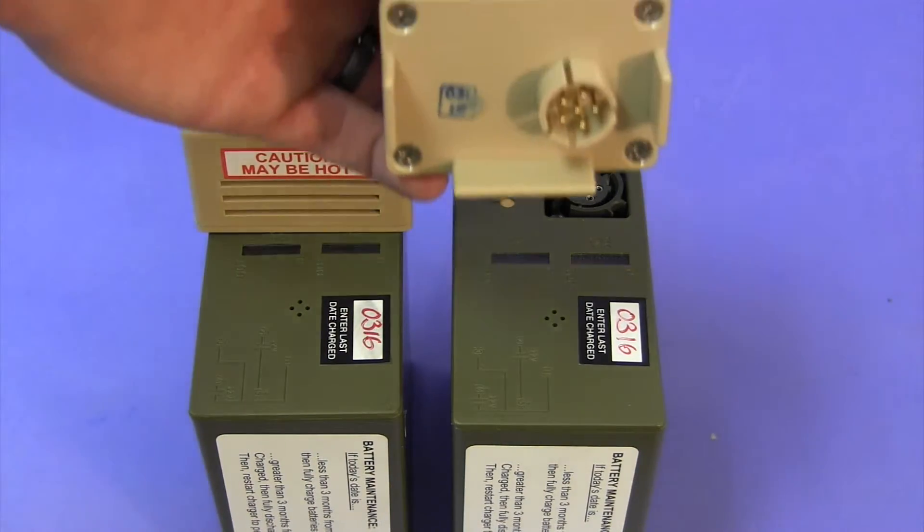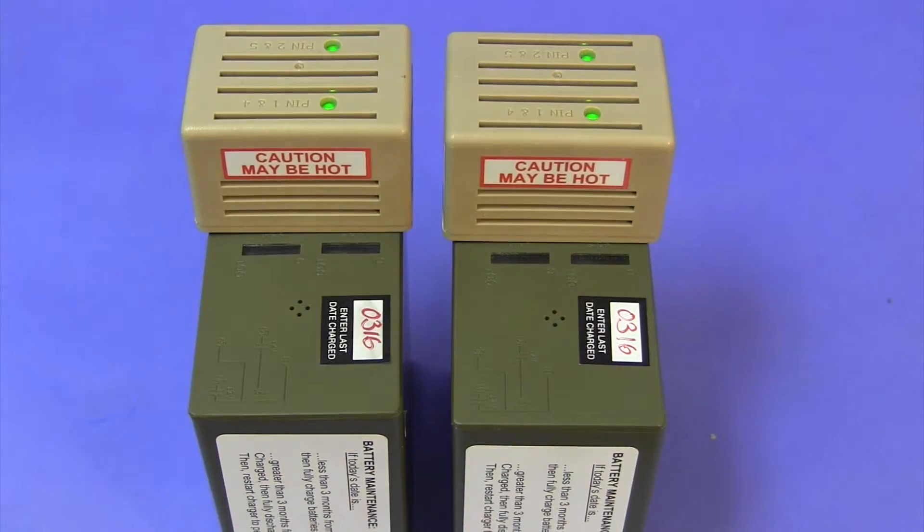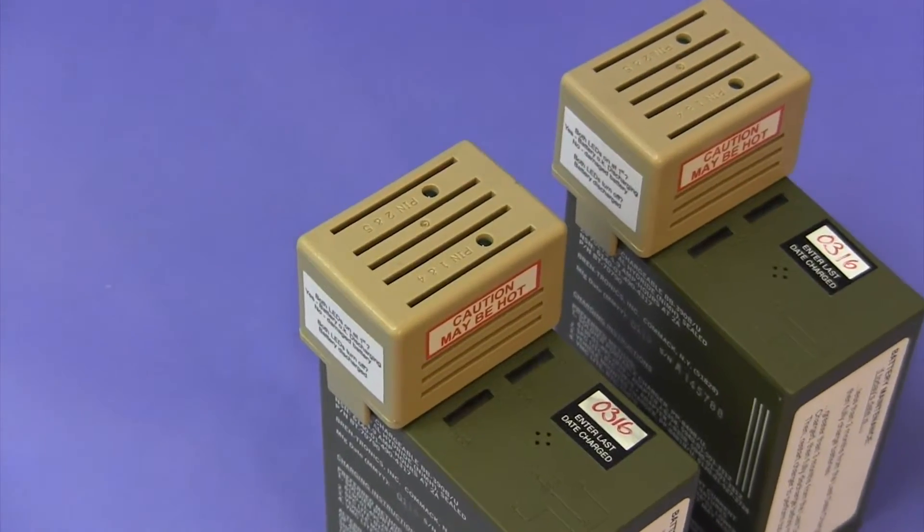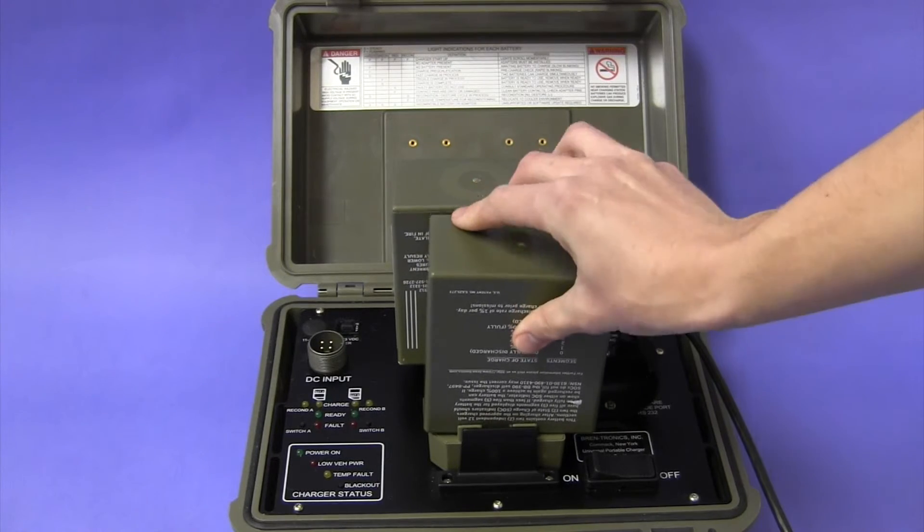The two LEDs on each self-discharge cap will illuminate green and remain lit until the discharge is complete. When battery discharge is complete, place the batteries on the charger and charge the batteries through two charge cycles.